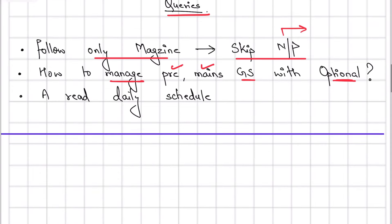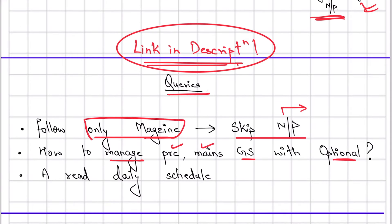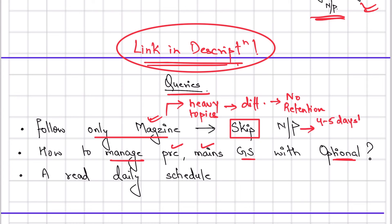Now coming to the query about whether we should skip newspapers and just read current affairs magazines. Look, if you've never read newspapers before and jump directly to current affairs magazines, sometimes you'll encounter very heavy topics in science and tech and economy, or very heavy concepts that will be difficult to understand. And plus you won't be able to retain it. You'll have to revise it repeatedly and give it as much time. But in reading newspapers, even after four to five days, you'll retain it in your subconscious mind for a longer period of time.